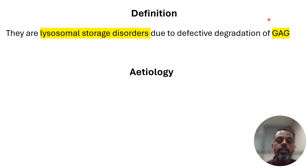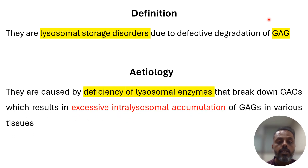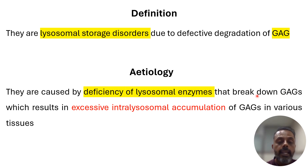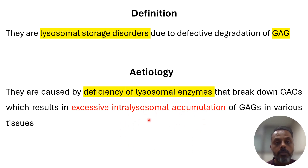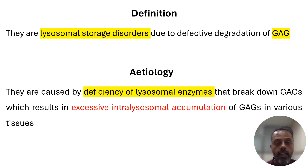As for the etiology, mucopolysaccharidoses occur due to the deficiency of lysosomal enzymes that break down glycosaminoglycans. Since the glycosaminoglycans are not being degraded, they start getting accumulated in the lysosomes, resulting in excessive intralysosomal accumulation.